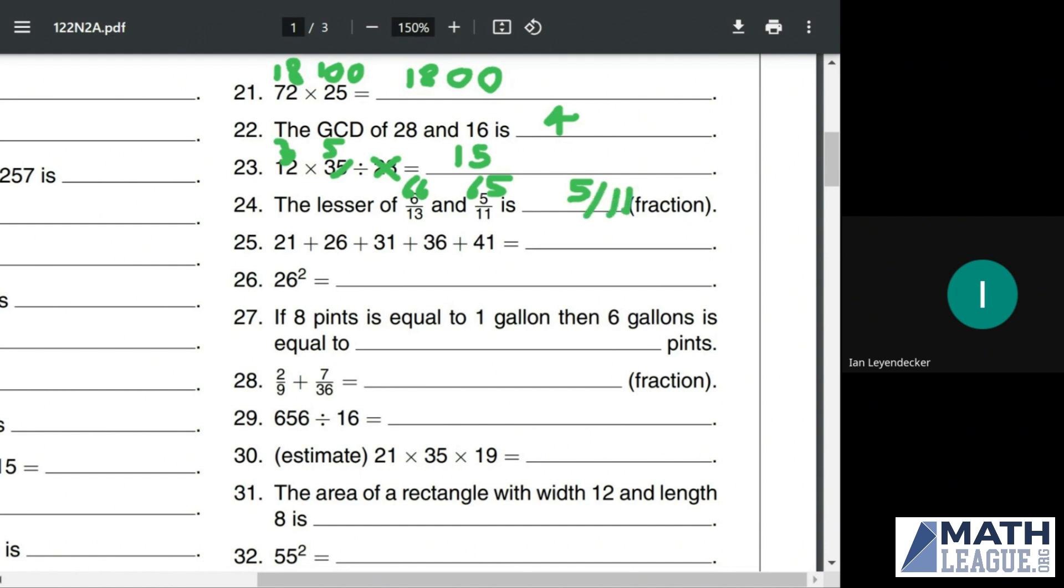For 21 plus 26 plus 31 plus 36 plus 41, first of all, notice that these pairs can be added up. 21 plus 26 is going to be 47. 31 plus 36 is going to be 67. Similarly, we can add those together to get 114. 114 plus 41 is going to be 155.